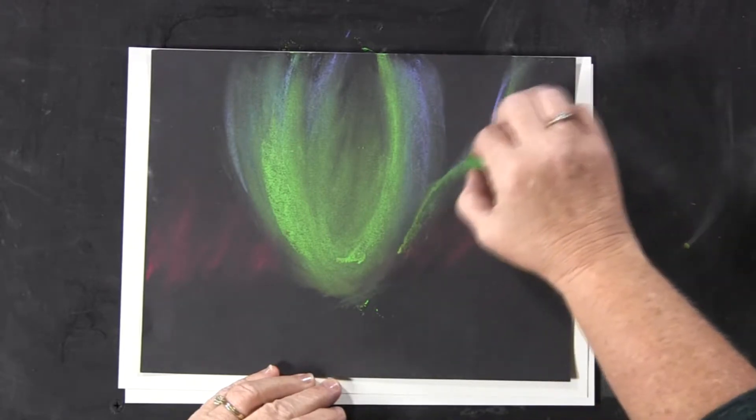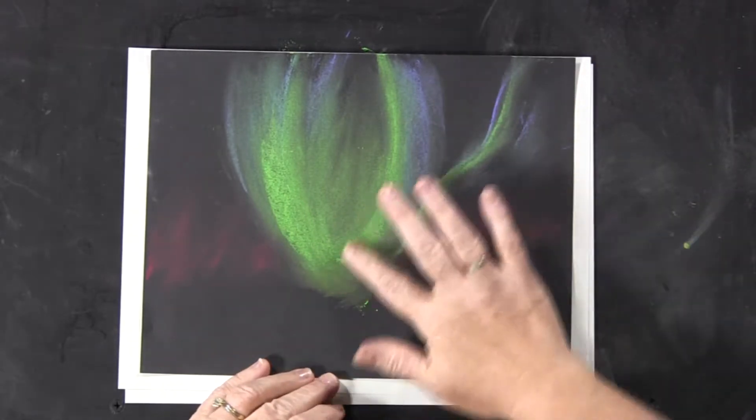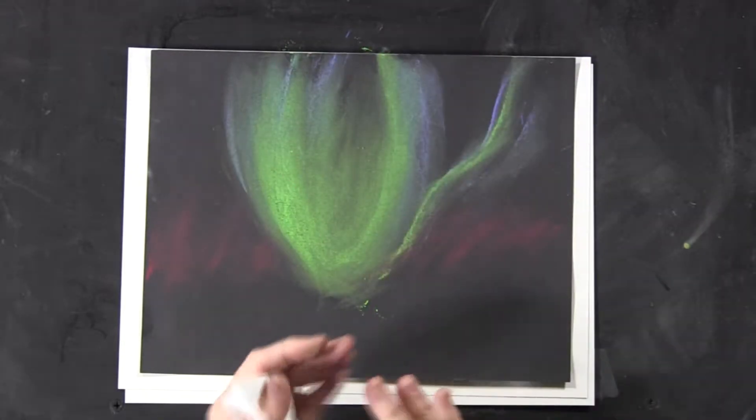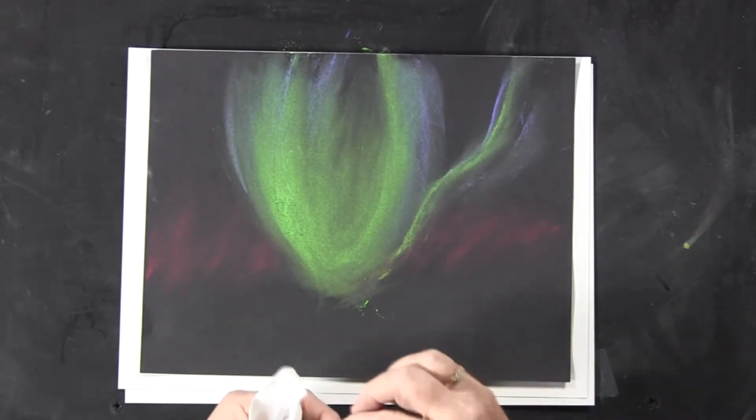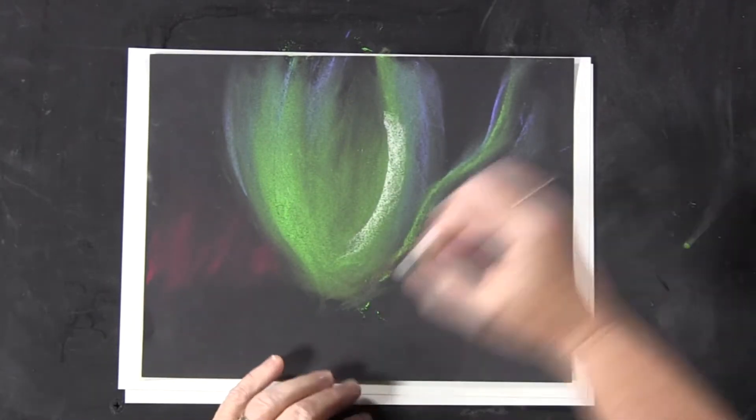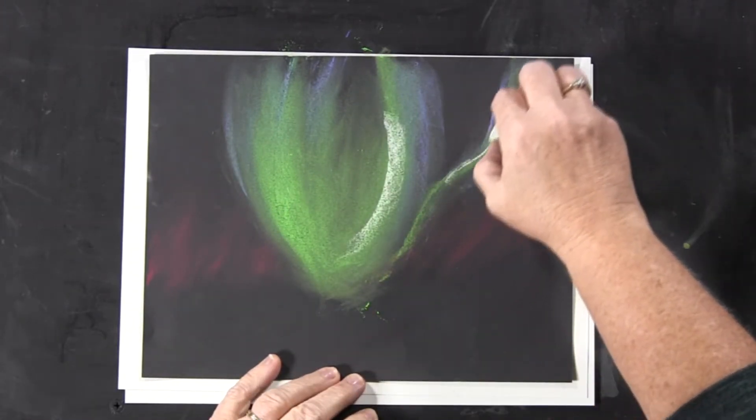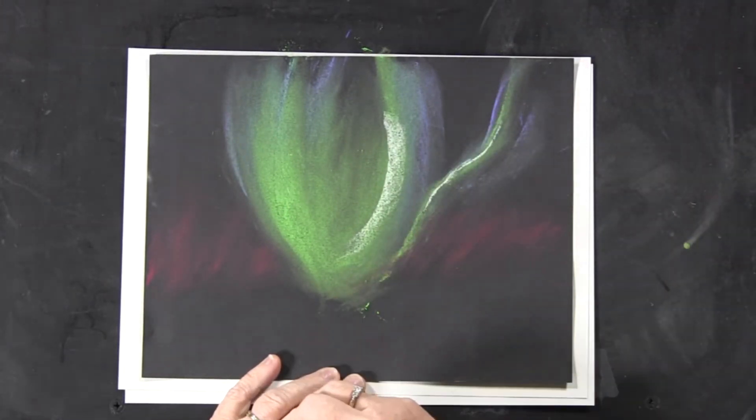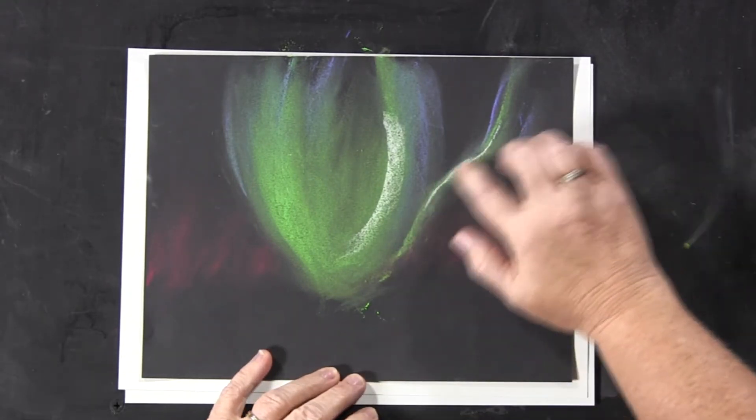I'm going to take my white and really brighten it at just a few places, especially around this curve. I'm going to put some white kind of curving around, a little tiny bit of white maybe in this section as well, and then we're going to smear that.